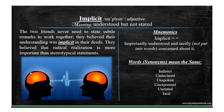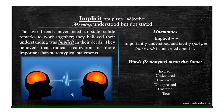Implicit means understood but not stated. Implicit — importantly understood and tacitly concerned about it. Here, tacit means not put into words. So implicit: importantly understood and tacit. Implicit also means indirect, undeclared, unspoken, unexpressed, unstated or tacit. The two friends never needed to state subtle remarks to work together. They believed their understanding was implicit in their deeds, and that radical realization is more important than stereotypical statements.